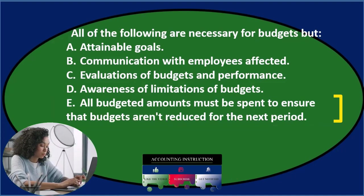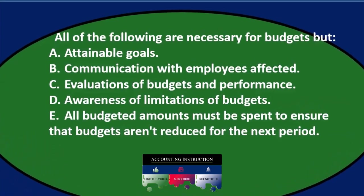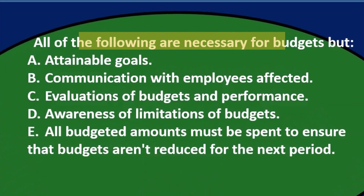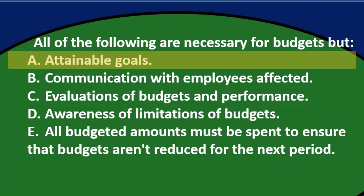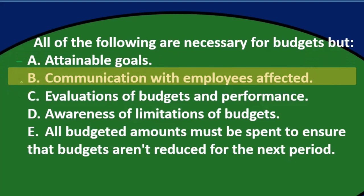Let's go through this again using the process of elimination. All of the following are necessary for budgets, but — so we're looking for the exception to the rule. Option A: attainable goals. I would think attainable goals is something we want, so I would think that would be there. Option B: communication with employees affected. Since A seems to belong, I'm going to cross it out.